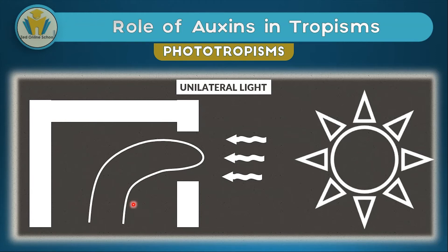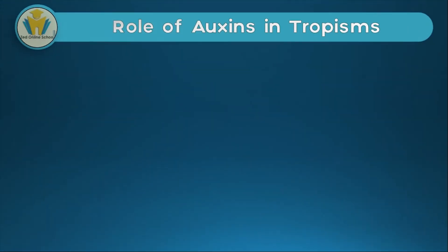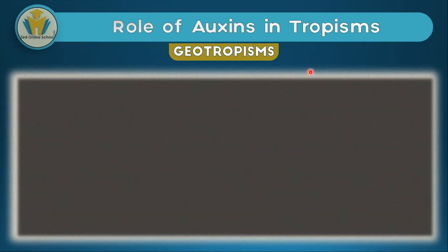That's it for the role of auxins in phototropism. Now we're going to look at the role of auxins in geotropism. Geotropism is just the response of a plant part by either moving towards or away from gravity.